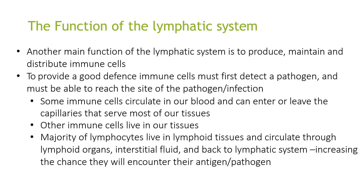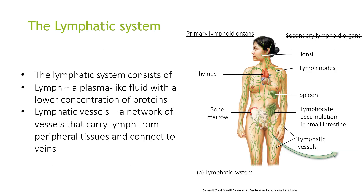Other immune cells live in our tissues. The majority of lymphocytes live in lymphoid tissues and circulate through lymphoid organs, interstitial fluid, and back to the lymphatic system, increasing the chance they will encounter the antigen. The lymphatic system consists of lymph, which is a plasma-like fluid of lower protein concentration. Lymphatic vessels are vessels that carry lymph from peripheral tissues and connect to veins.